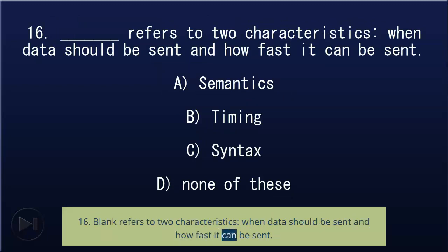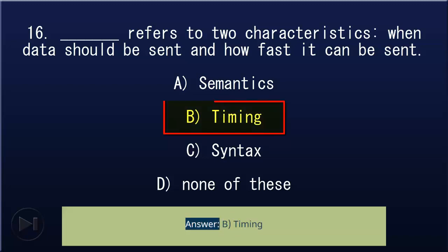16. Blank refers to two characteristics: when data should be sent and how fast it can be sent: A) semantics, B) timing, C) syntax, D) none of these. Answer: B, timing.